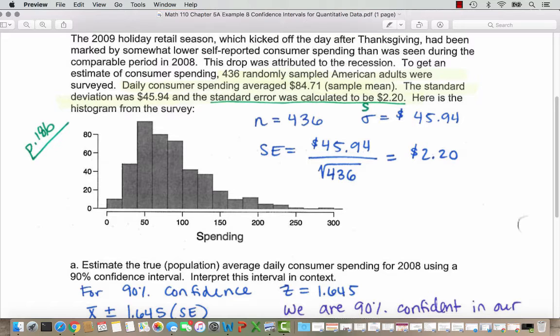So we want to see how they calculated that standard error of $2.20. They use the fact that our sample size n is 436. Our standard deviation, this is a sample standard deviation, so it should be S. It would be sigma if it was a population, but since it's just a sample, we use S. It is $45.94. So to find the standard error, we take our sample standard deviation, $45.94, and divide it by the square root of 436. When we round, we get $2.20 for our standard error.